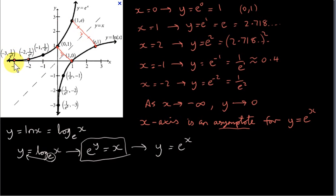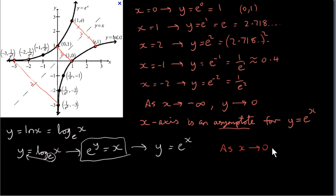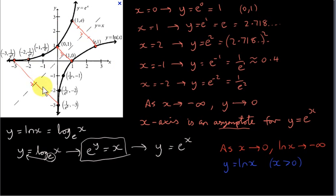If we reflect (1, e) through that line, we pass through the line at 90 degrees and make the distances equal, and we get the point (e, 1) on the graph of y equals ln of x. For any point we reflect through, we just switch the coordinates. So what's happening as x tends towards minus infinity on the original graph is that the y values here tend towards minus infinity. As x tends towards 0, ln of x is tending towards minus infinity.